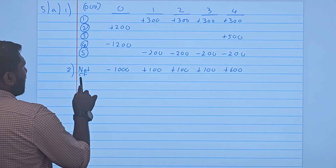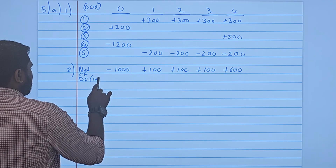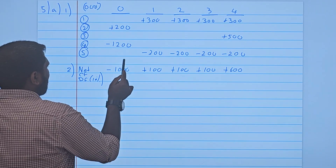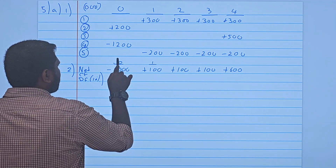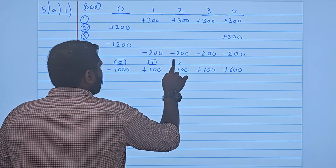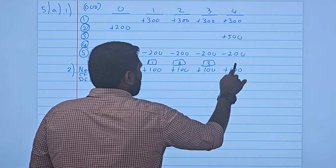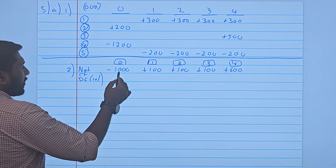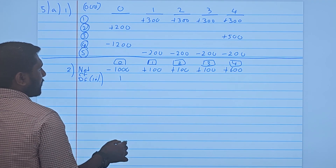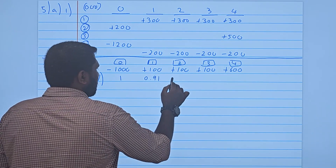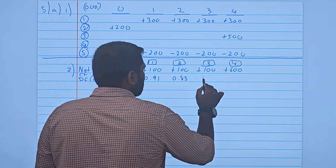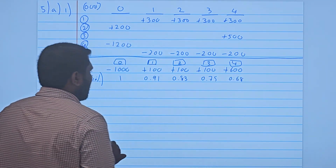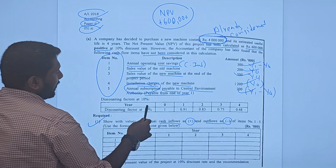The net cash flows need to be multiplied by the discounting factors — in this question the rate is 10%. Year 0 discount factor is always 1; Year 1 = 0.91; Year 2 = 0.83; Year 3 = 0.75; Year 4 = 0.68.